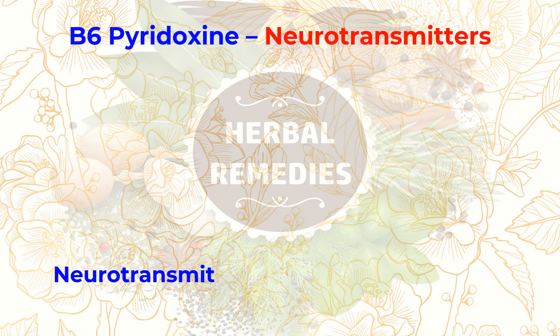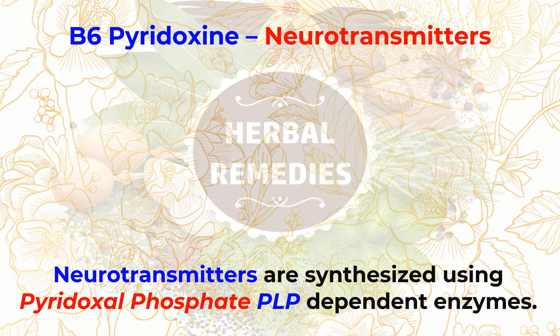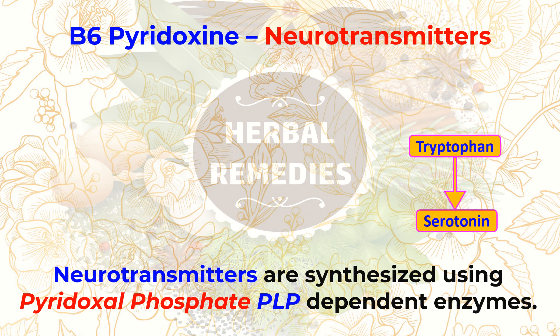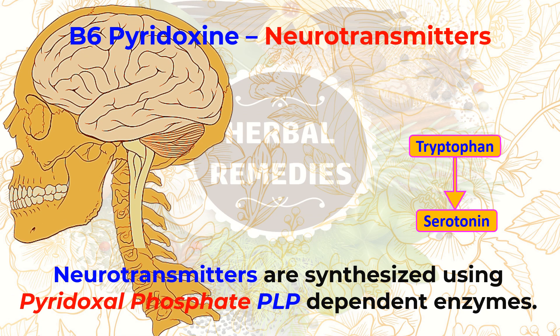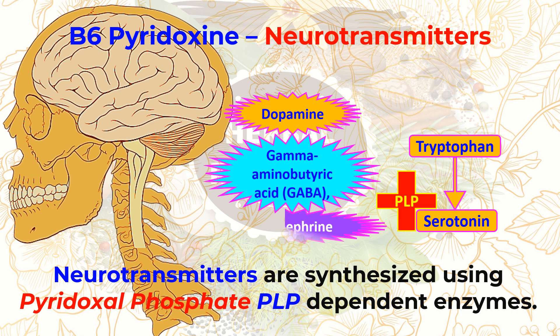Many important neurotransmitters are synthesized using PLP-dependent enzymes. Serotonin is synthesized from tryptophan in the brain with the help of PLP. Other neurotransmitters synthesized using PLP-dependent enzymes include dopamine, gamma-aminobutyric acid (GABA), and norepinephrine.